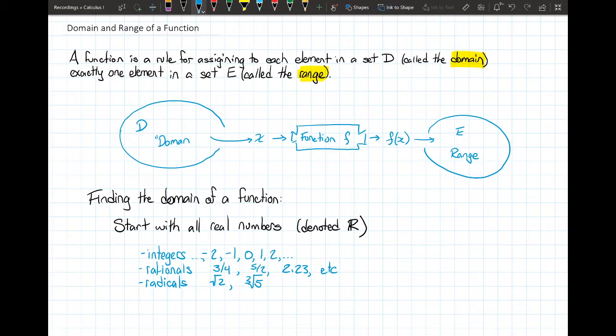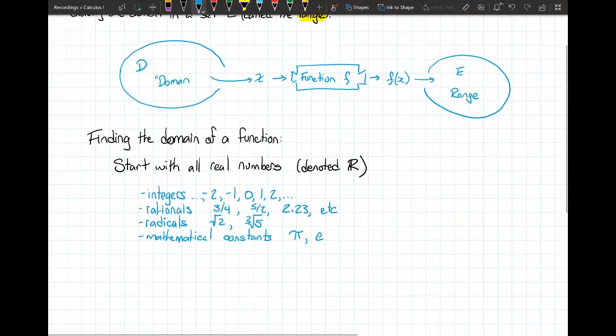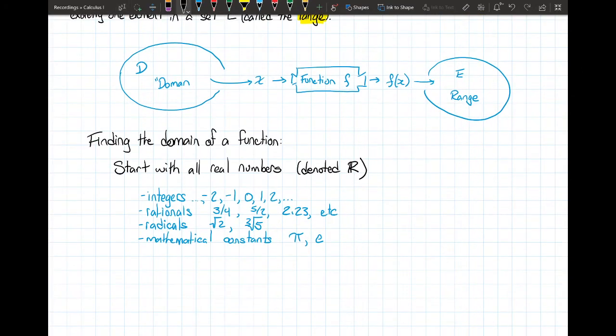It includes all kinds of other mathematical constants. Mathematical constants you may be familiar with, like pi. We'll be talking about another mathematical constant, e, quite often in calculus as well. Now you've got an idea of all of the potential numbers that might be able to be included in the domain.